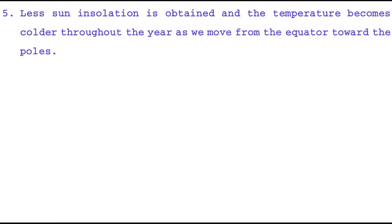As we move from the equator towards the pole, less solar insolation is obtained and the temperature becomes colder throughout the year.